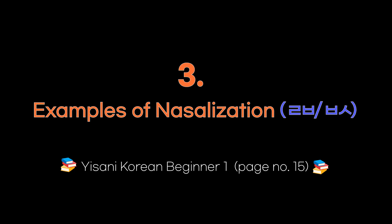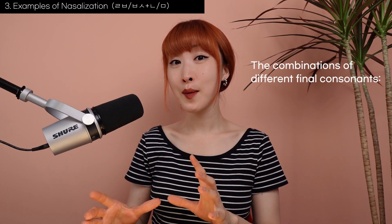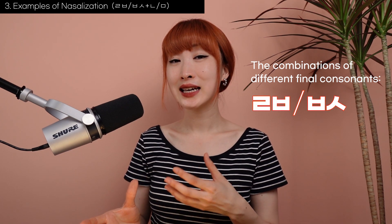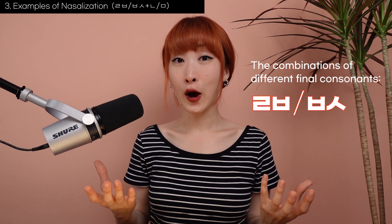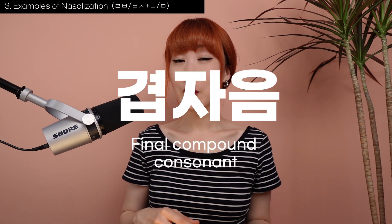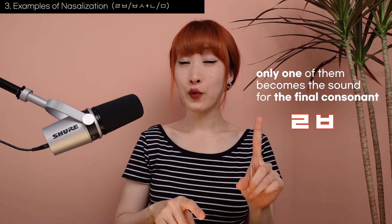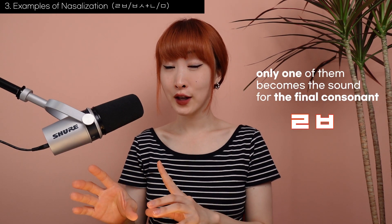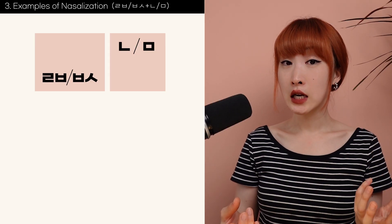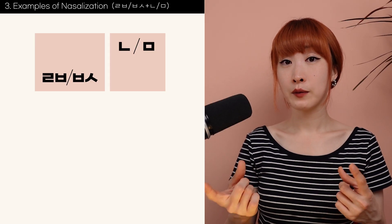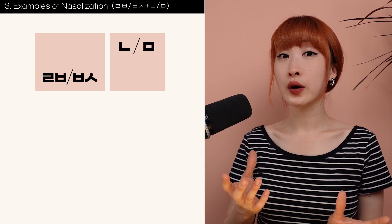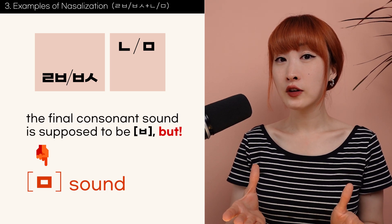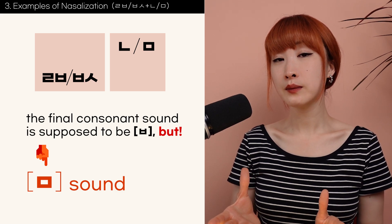By the way, you might not have seen the combination of different final consonants, like 겹받침 — double final consonants. Among the two consonants, only one becomes the sound for the final consonant. When a double final consonant such as ㄼ, ㄿ, or ㄺ in the previous character combines with ㄴ or ㅁ, the final consonant is pronounced as an ㅁ sound.